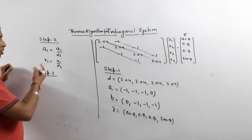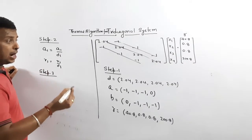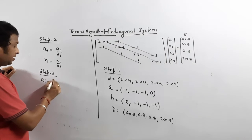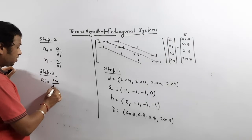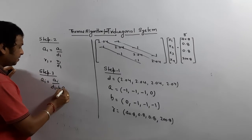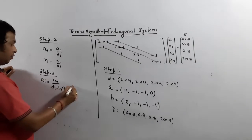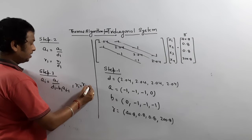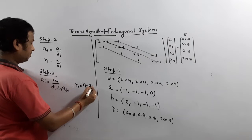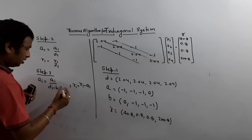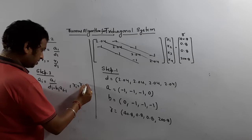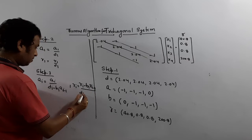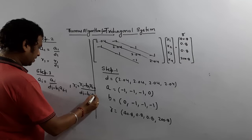Step 3: for the remaining values A2, A3, A4 and R2, R3, R4, we have formulas. The formula for Ai is: Ai = Ai / (Di − Bi × A(i−1)). The formula for Ri is: Ri = (Ri − Bi × R(i−1)) / (Di − Bi × A(i−1)). Always use the improved (updated) values of A and R from the previous step.